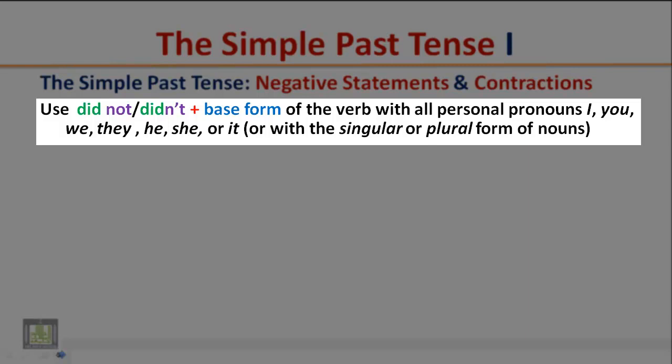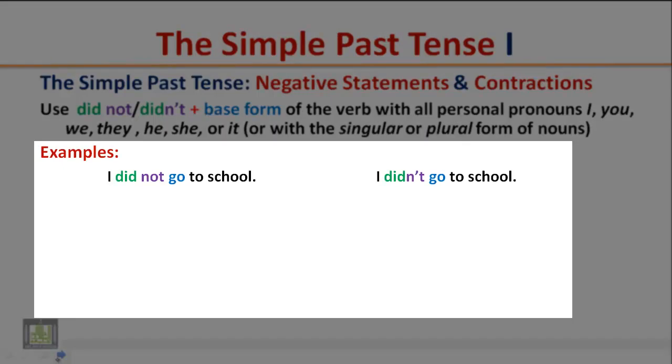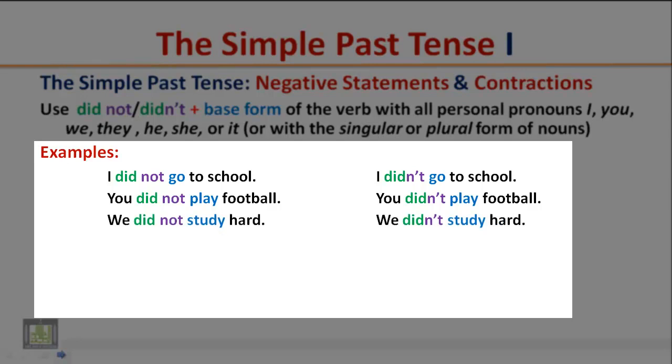Examples: I did not go to school. Contracted form: I didn't go to school. You did not play football. You didn't play football. We did not study hard. We didn't study hard.